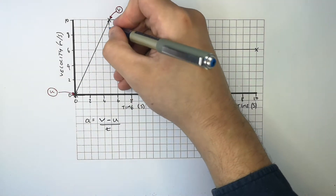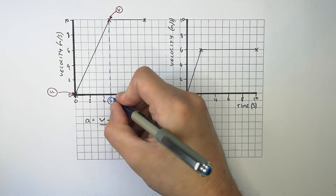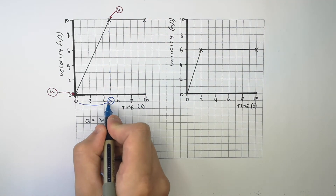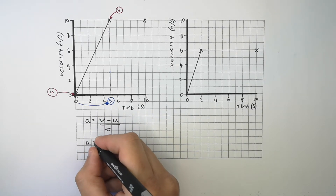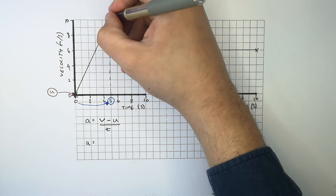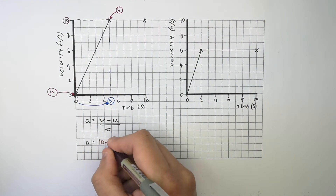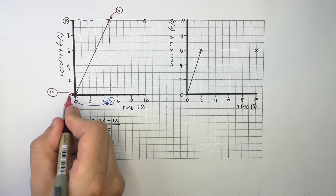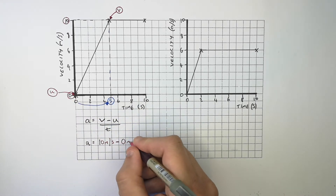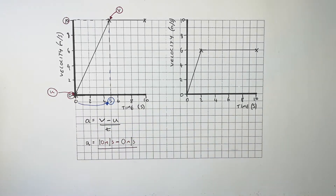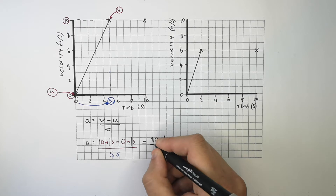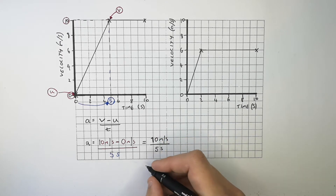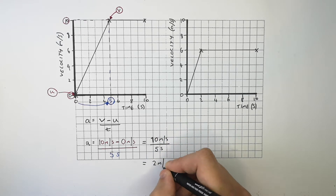The time it took the car to increase its velocity from 0 metres per second to 10 metres per second is 5 seconds. Substituting in the numbers: a equals v, 10 metres per second, minus u, 0 metres per second, divided by time, 5 seconds. The change in velocity is 10 metres per second divided by 5 seconds, giving an acceleration of 2 metres per second squared.